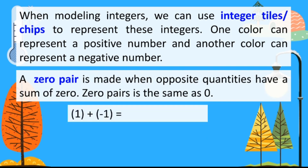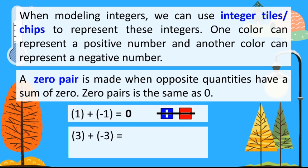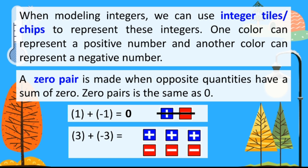For example, positive 1 plus negative 1: we will use one blue tile and one red tile, then cancel them out because they equal zero. So the answer is zero. Next, positive 3 plus negative 3: we have 1, 2, and 3 blue tiles for positive 3, and 1, 2, and 3 red tiles for negative 3. Then cancel out the zero pairs — 1, 2, and 3. So our sum or answer is zero.